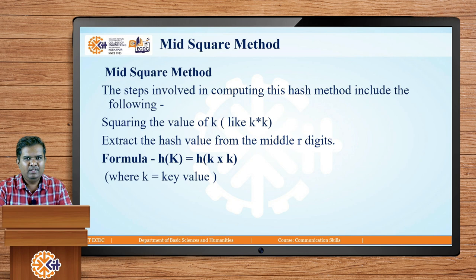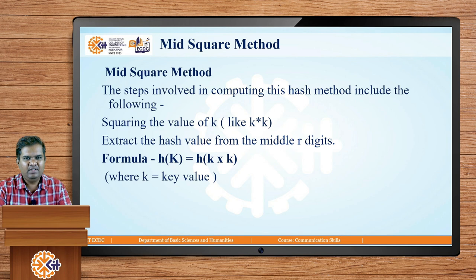The next method is the mid-square method. This involves squaring the value of the key — that is k × k — and then extracting the middle r digits. For example, if the key is 15, then 15 squared is 225, and we extract the middle digit 2, which acts as the index to store key 15. The formula is: h(k) = h(k × k), where k is the key value.